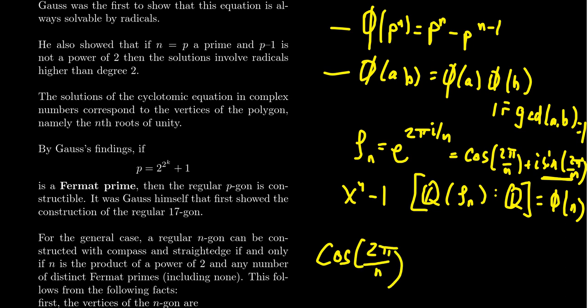As we were considering trisecting an angle, we discovered that there were some cosines that we couldn't do. Like, we couldn't do cosine of 20 degrees. Is that a possibility coming on right here?